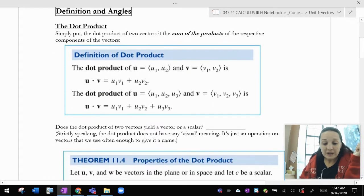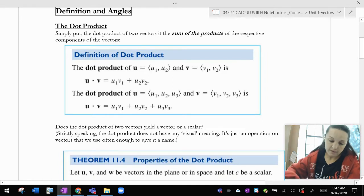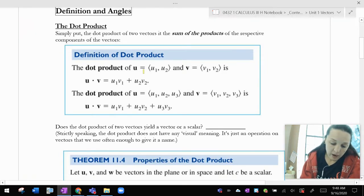Simply put, the dot product of two vectors is the sum of the products of the respective components of the vectors. So really what that means is, if you have u, that's u1, u2, and v, that's v1, v2, or if you have three components, that works too.